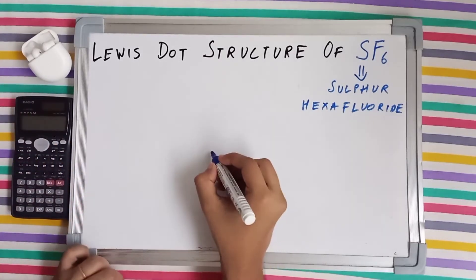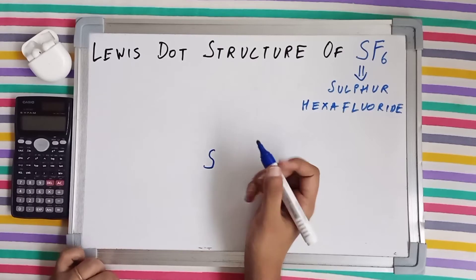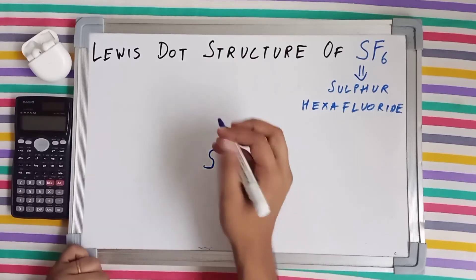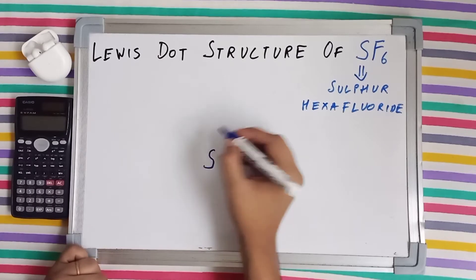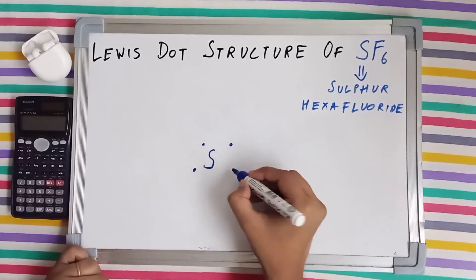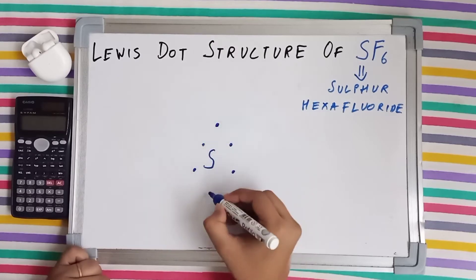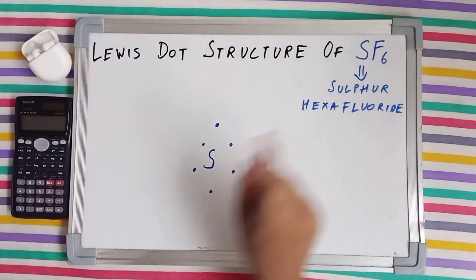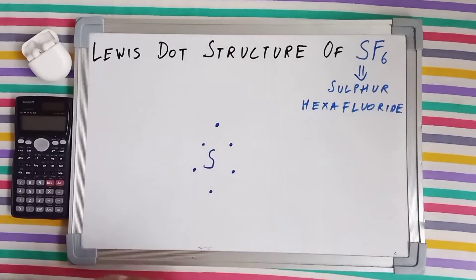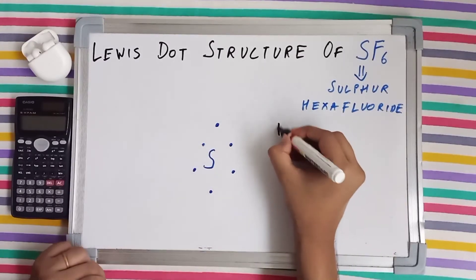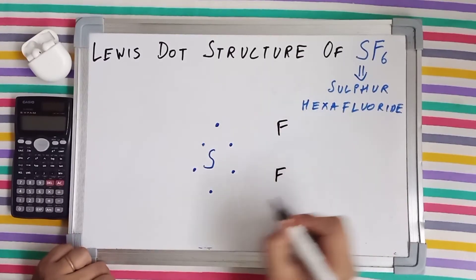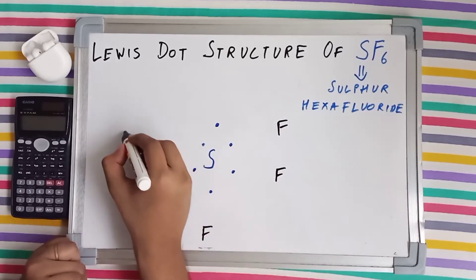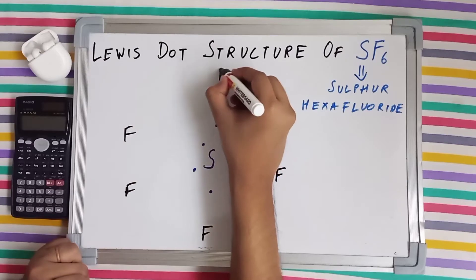So sulfur has six unpaired electrons as well as six valence electrons. So let's draw it. And fluorine had seven valence electrons, which means it just needs a single electron to complete its octet. I'm drawing the fluorines here, the third one, the fourth one, the fifth one, and the sixth one.